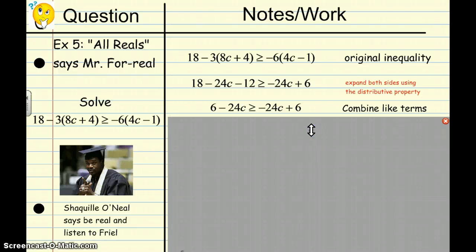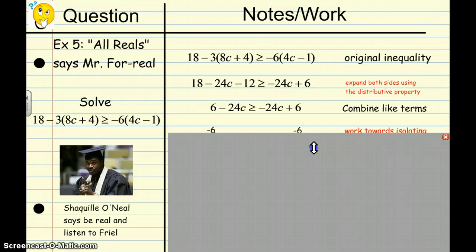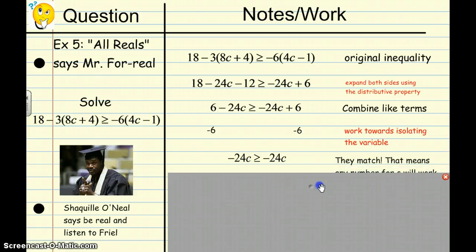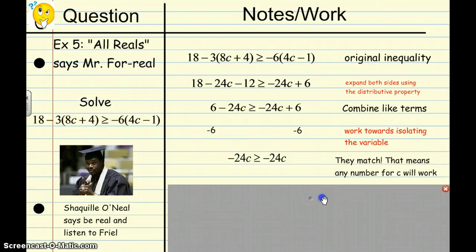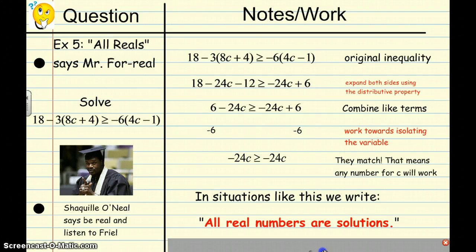Hmm. Something looks fishy here. What should we do? Well, let's get those 6's out of the way and we get negative 24C is greater than or equal to negative 24C. Well, they look identical. They match. That means any number will work for C. Put any number in there and they will be equal. In cases like this, we say all real numbers are solutions.